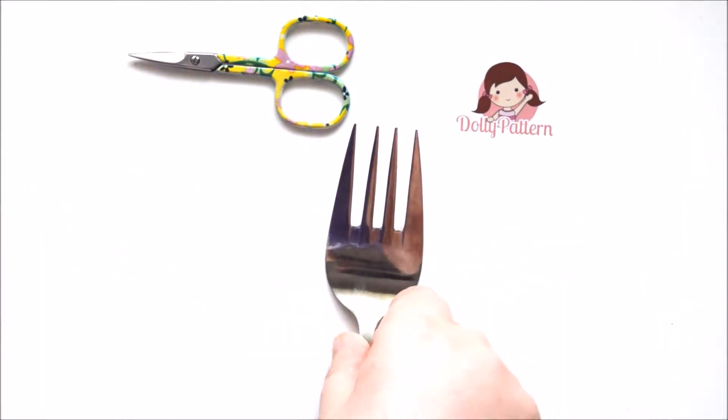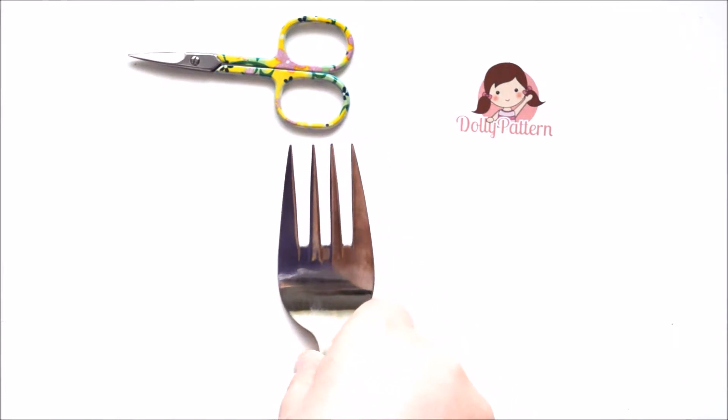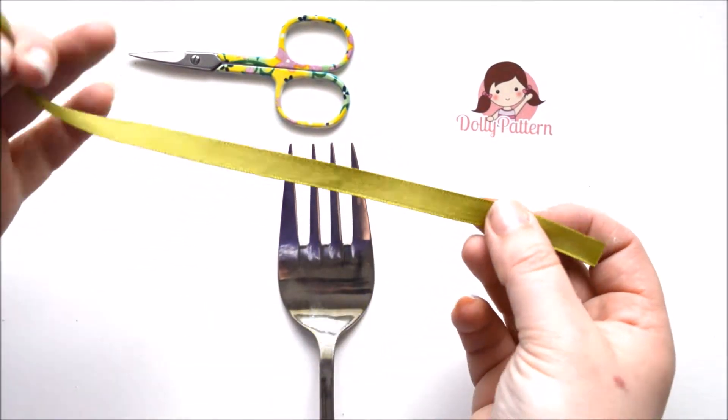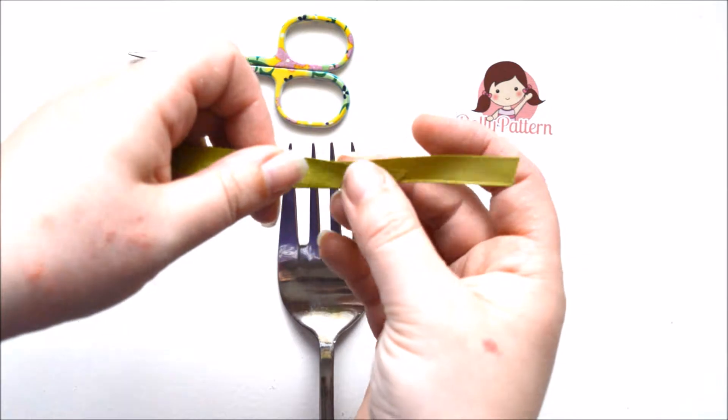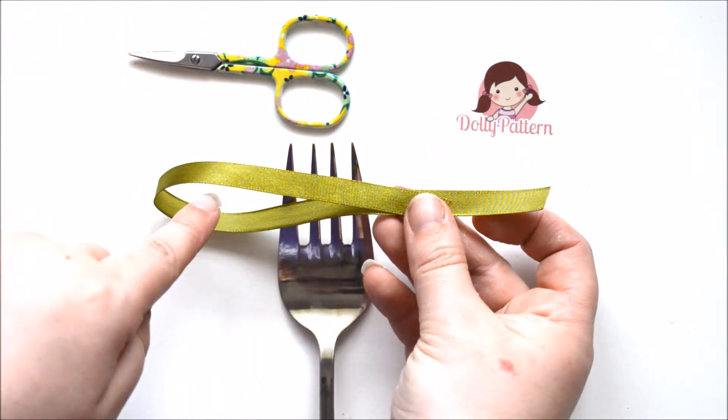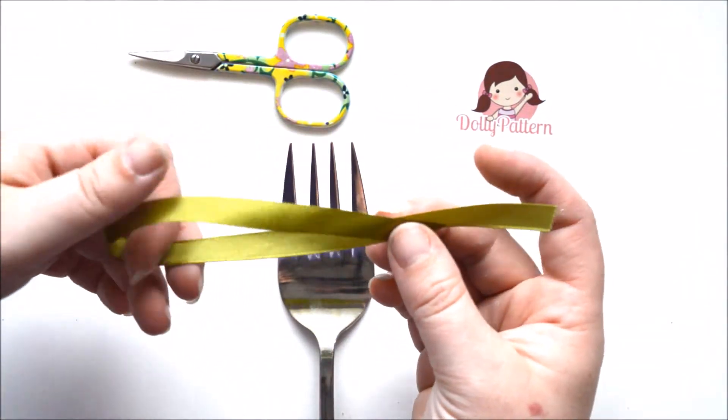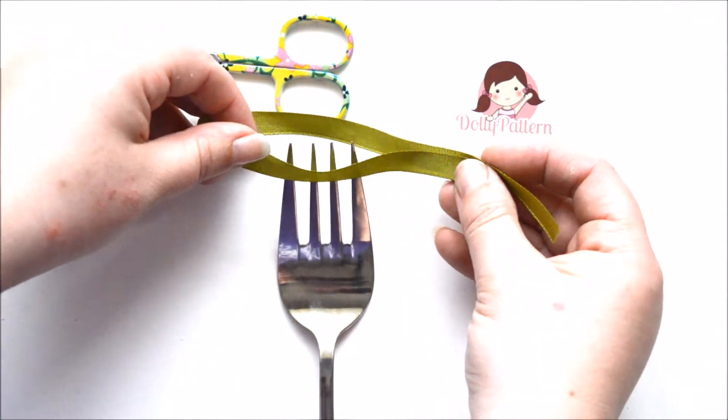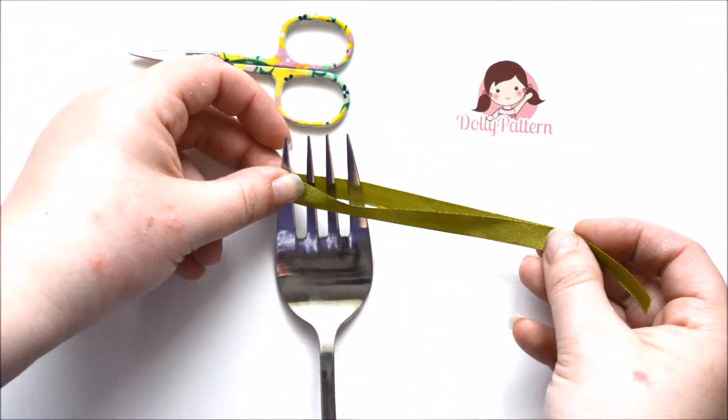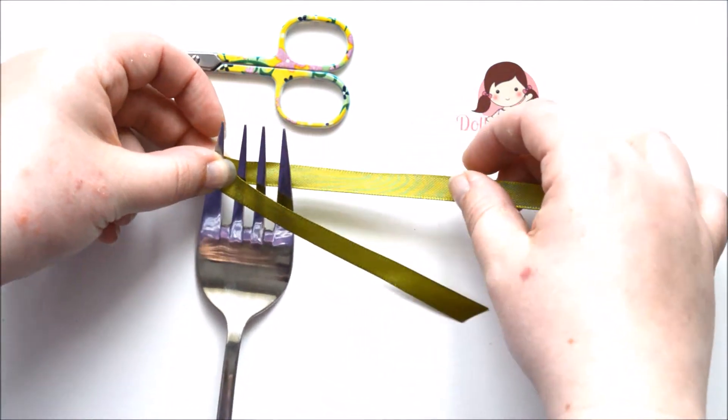So we get our fork and shift it into the middle there. Our piece of ribbon, fold it in half. Make sure the top edge is shorter than the back edge and we're gonna pop that over our fork like this and lay it like this.